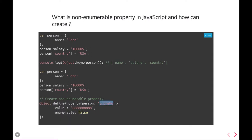Using Object.defineProperty, we can create a new property in the person object. We set the value and also flags like enumerable and configurable. These are the descriptor properties of an object property. Setting enumerable to false means that whenever you copy this object using Object.assign to another object, this particular property's reference will not get copied.